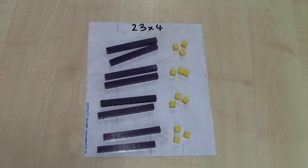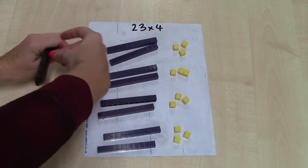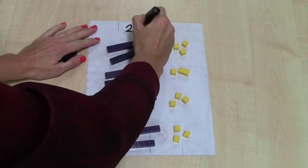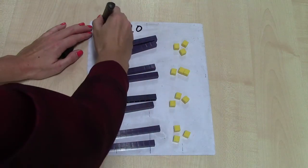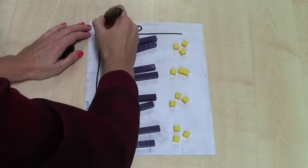So what I've done here, it's a bit like I've made a grid. In this column here, I've got my 20. I've got one, two, three, four groups of 20.